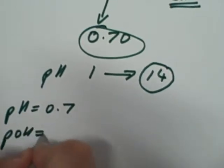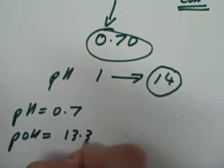Well, that's easier. 14 minus 0.7, which is in our heads, gives us 13.3.